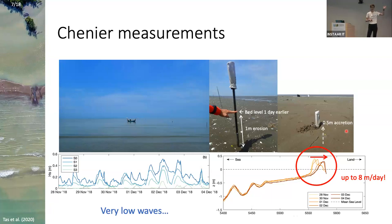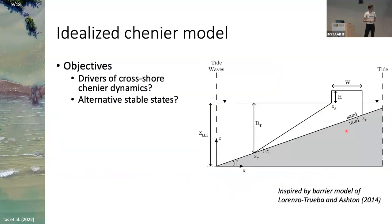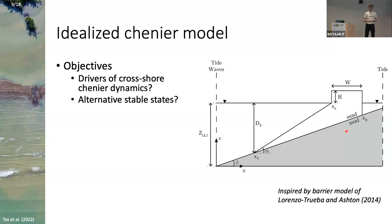We knew over the last 15 years that chenier was more or less in the same location — so what's going on? What processes are driving this? For this, we developed an idealized chenier model. You might recognize the setup — it was inspired by the barrier island model, but the big difference is we're now dealing with a muddy coastline. The substrate is mud, assumed to be static, and we only looked at the dynamics of the sandy part, because that's what matters for the mangroves. The model objectives were to investigate what processes drive cross-shore dynamics and whether we can explain a possible alternative stable state.